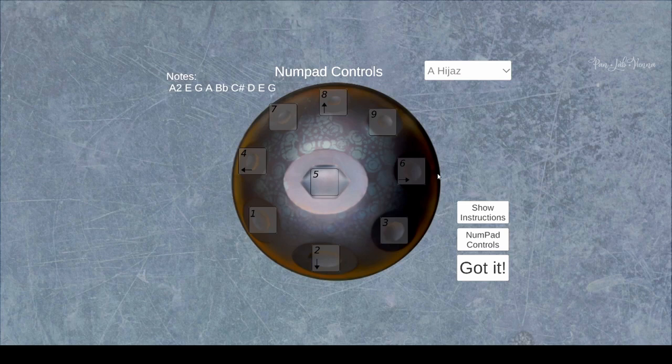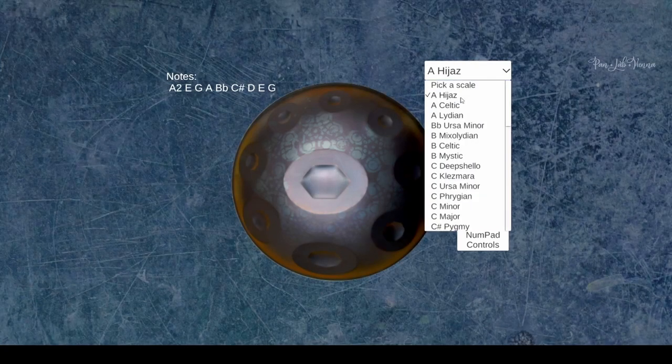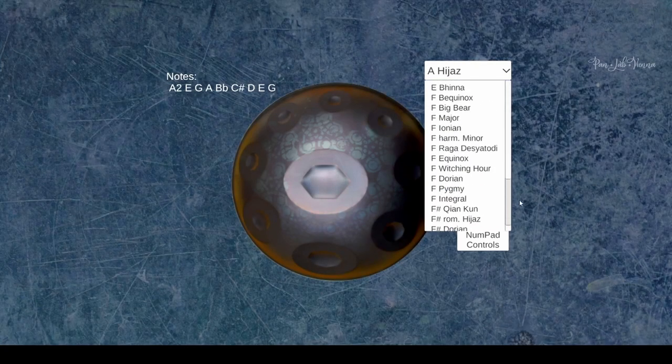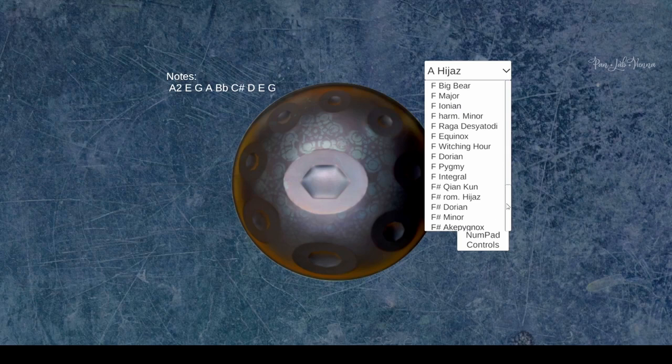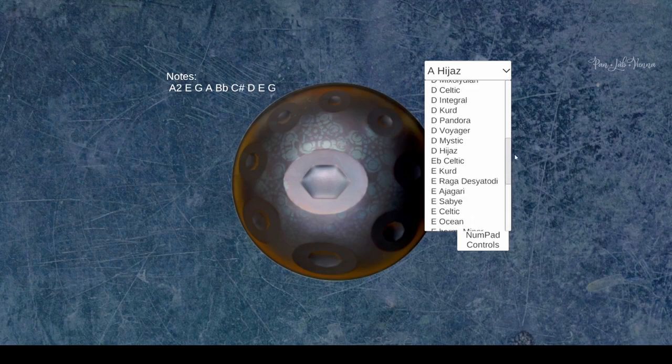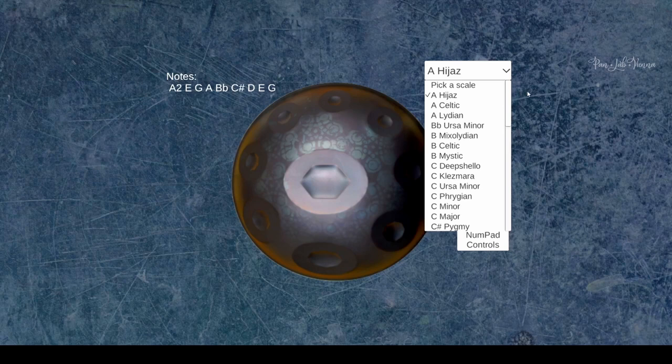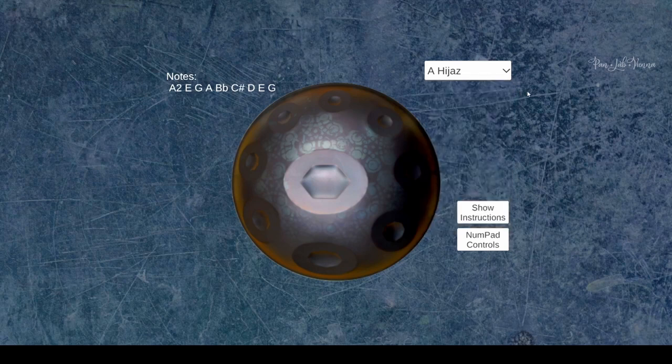So yeah, we hope you enjoy this. There are 53 scales ranging from an A2 center note all the way up to an F sharp three. All kinds of different scales just there for you to explore and have fun. So take care of people and enjoy this fun little app.